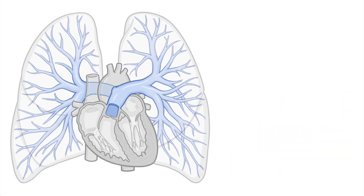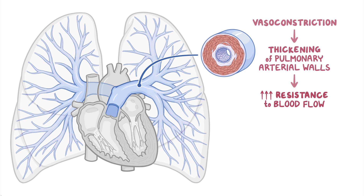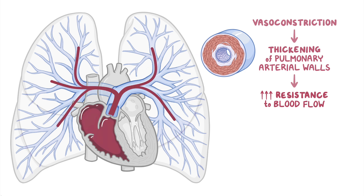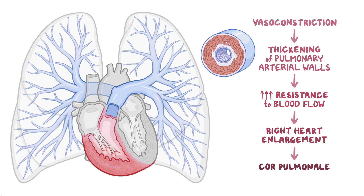Regardless of the cause, there's vasoconstriction and thickening of pulmonary arterial walls in PAH, resulting in increased resistance to blood flow. This places an added strain on the right heart as it tries pumping blood through a narrower vessel. Over time, overloading of the right ventricle leads to right heart enlargement, which in turn progresses to cor pulmonale, or right-sided heart failure.